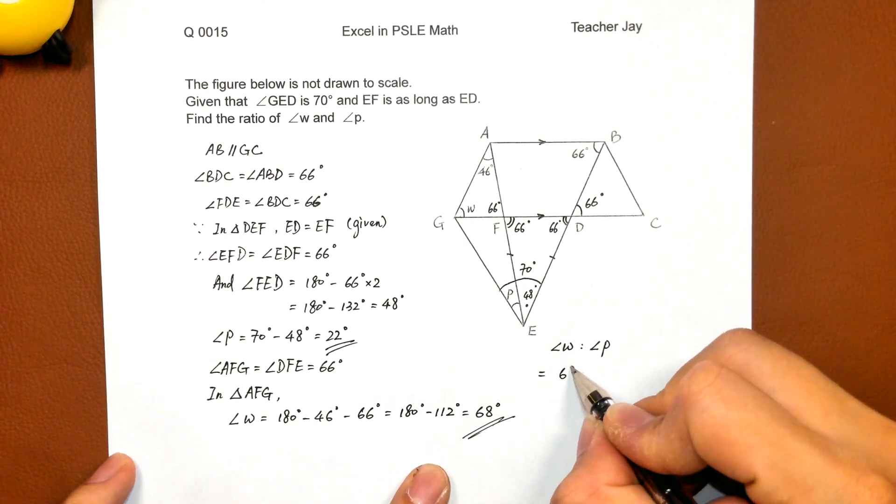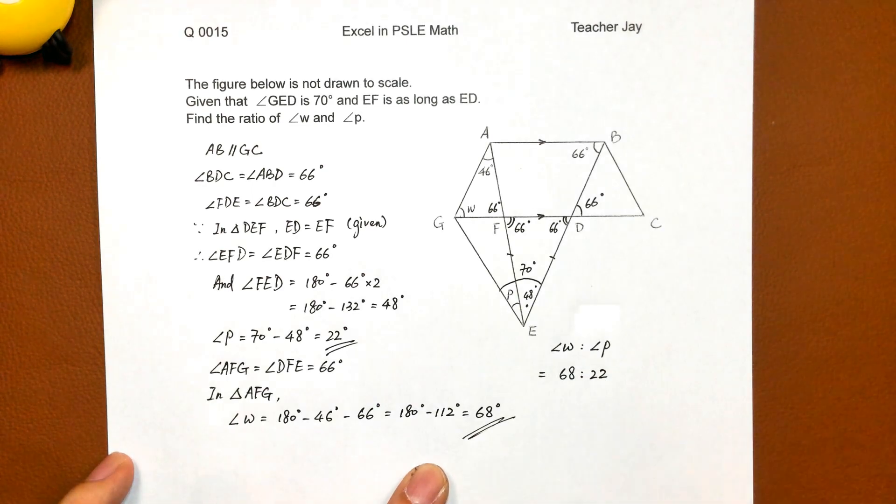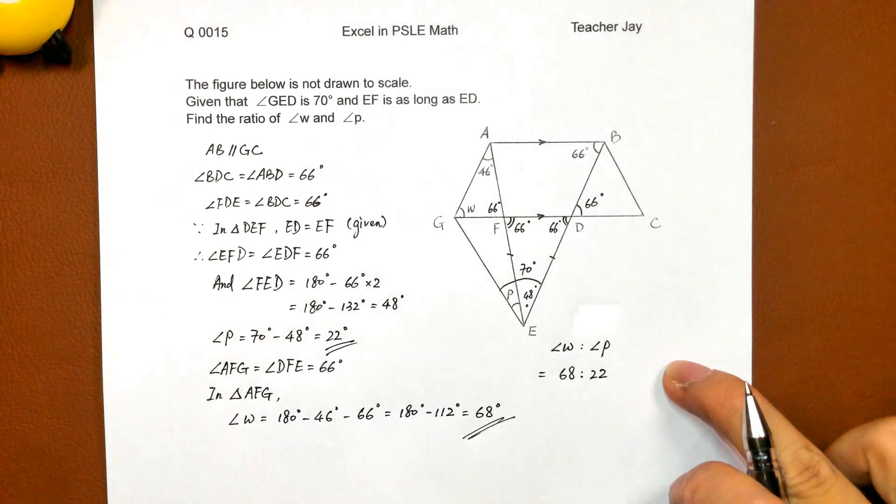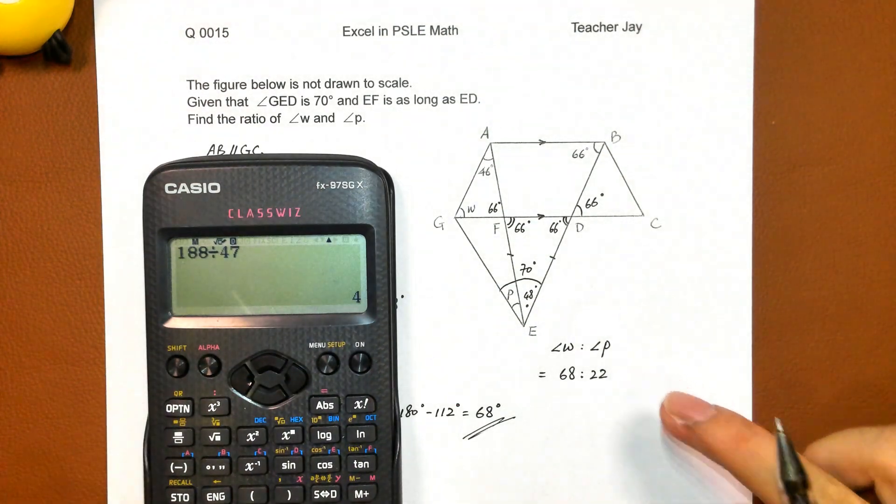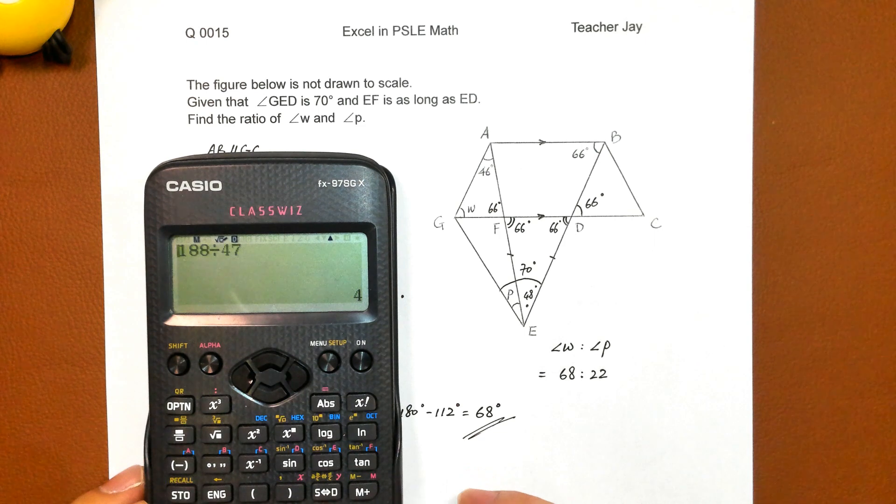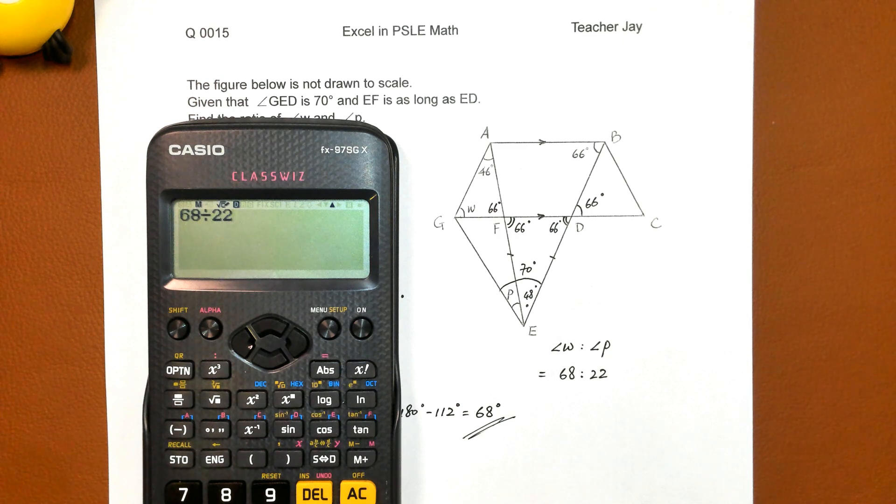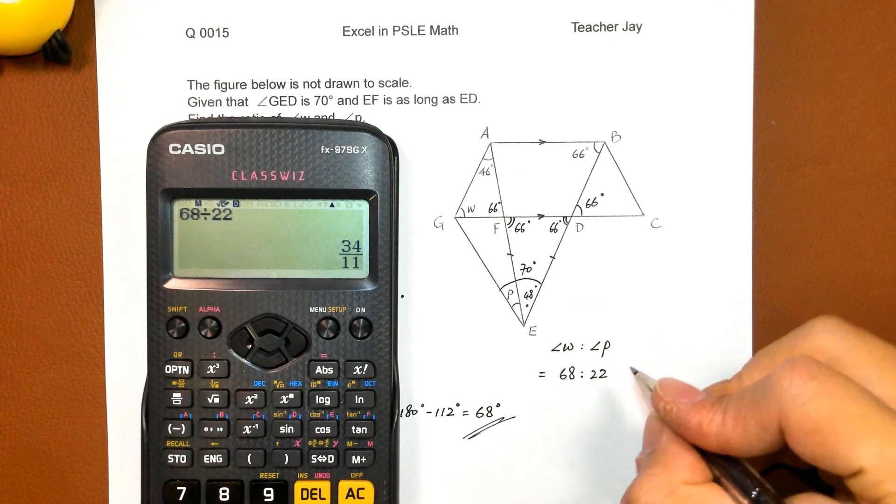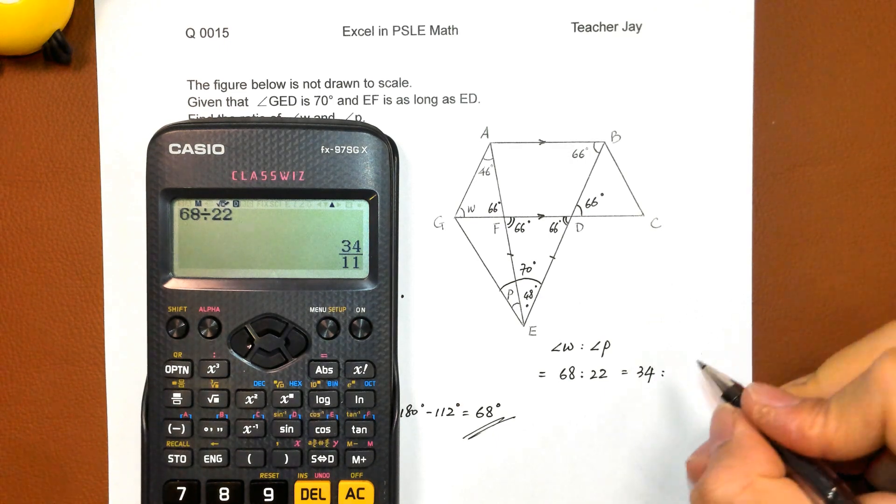W 68 to 22. For this ratio, we must convert it to the simplest form. So we use a calculator. 68 divided by 12. That's the ratio here. 34 to 11.